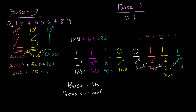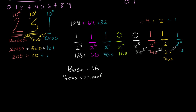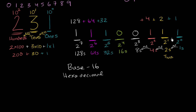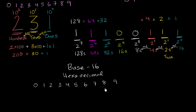As you can imagine, instead of only having 10 digits, it is going to have 16. So what are those digits going to be? Instead of the places being powers of two or powers of 10, they're going to be powers of 16. We could reuse the existing 10 digits: zero, one, two, three, four, five, six, seven, eight, nine.